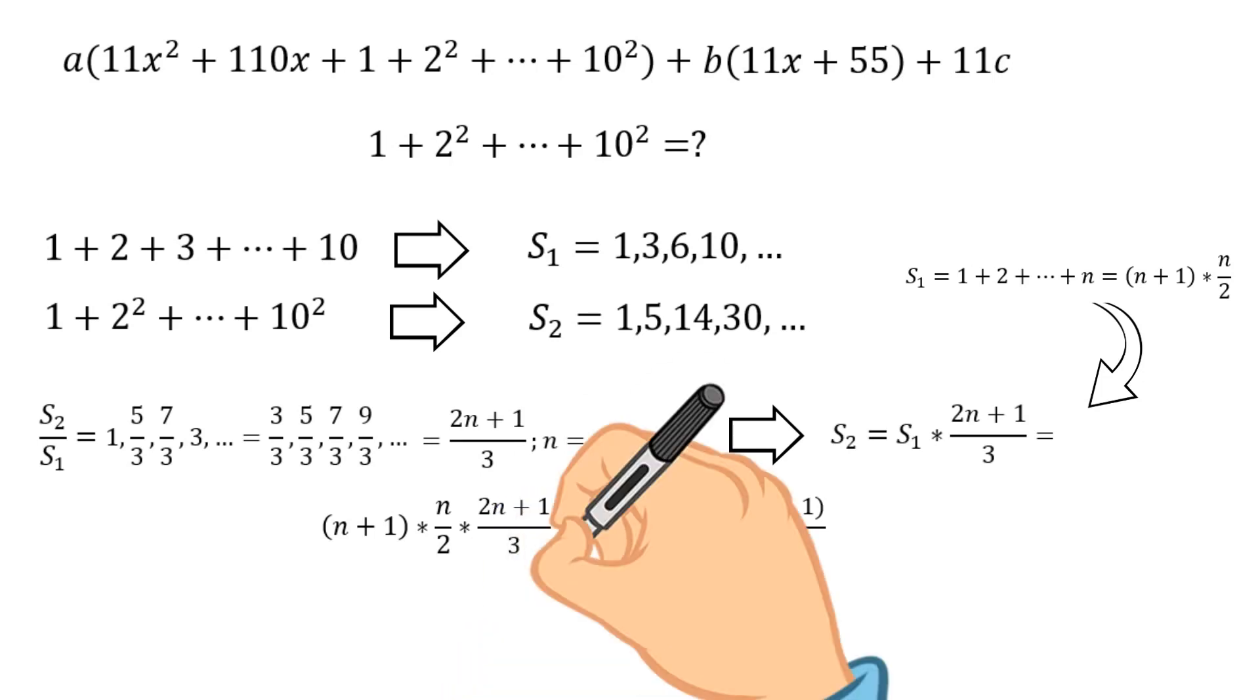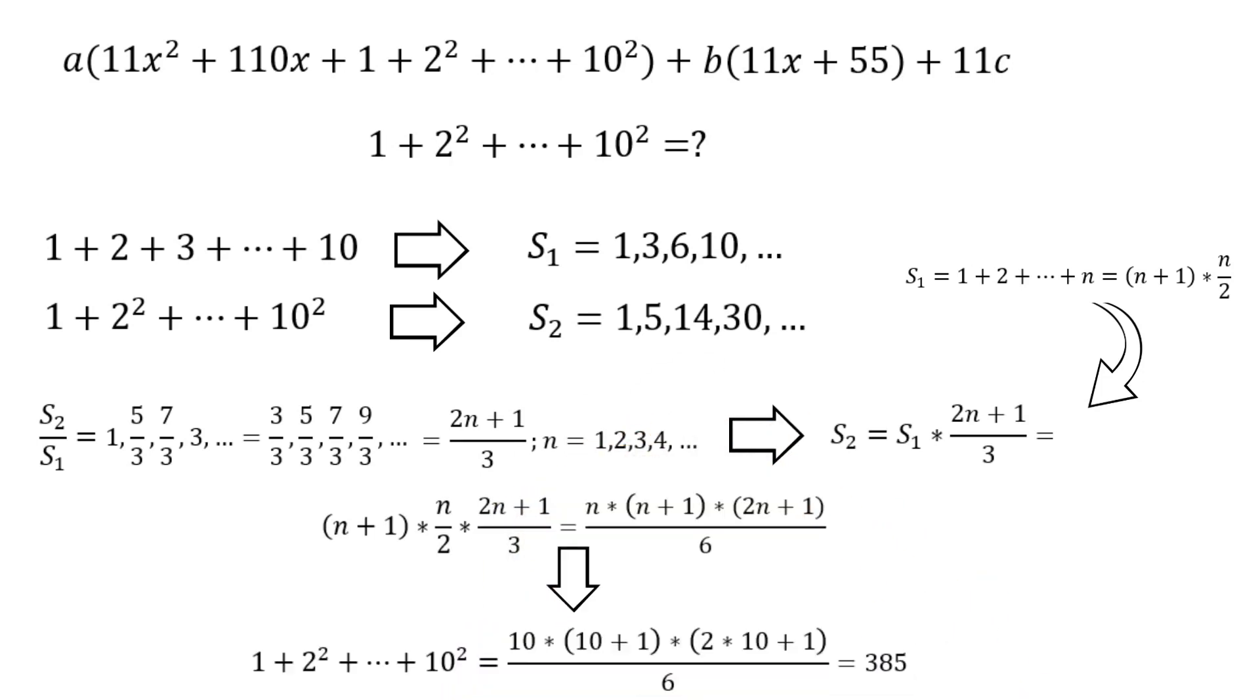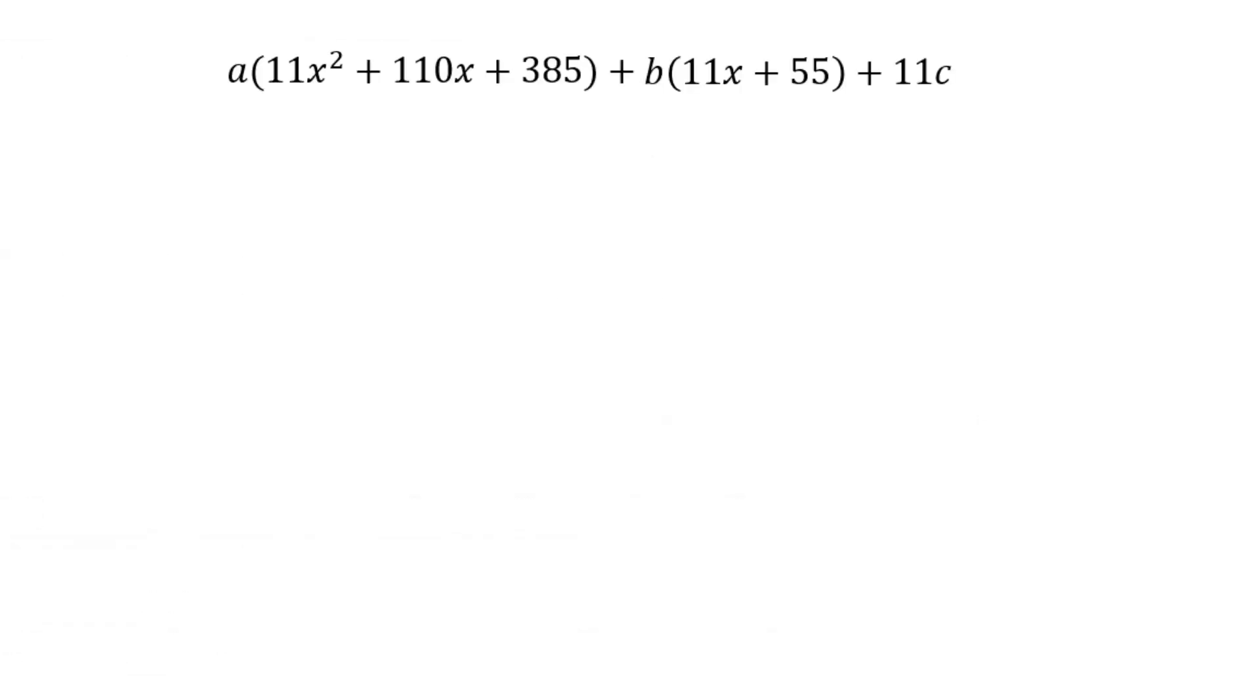Finally, using the derived general formula, we find the sum of consecutive squares in our particular case. Therefore, now we have all components to proceed to the final step of the solution. By grouping the coefficients in front of the powers of X together, we end up with the following equation.